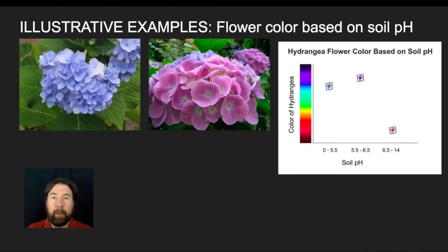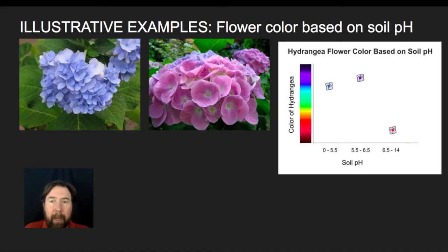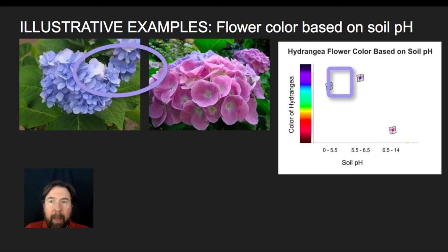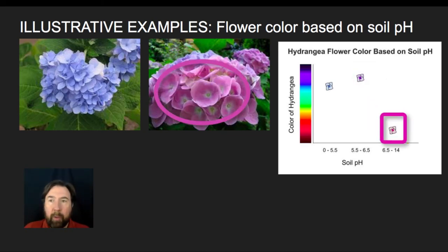pH can also produce different phenotypes. The most prominent example is hydrangea flowers. If you plant hydrangeas in very acidic soils they tend to look blue, they have a purplish color in more neutral pH of 5.5 to 6.5, and if you put them in neutral to basic pHs they actually appear pink.